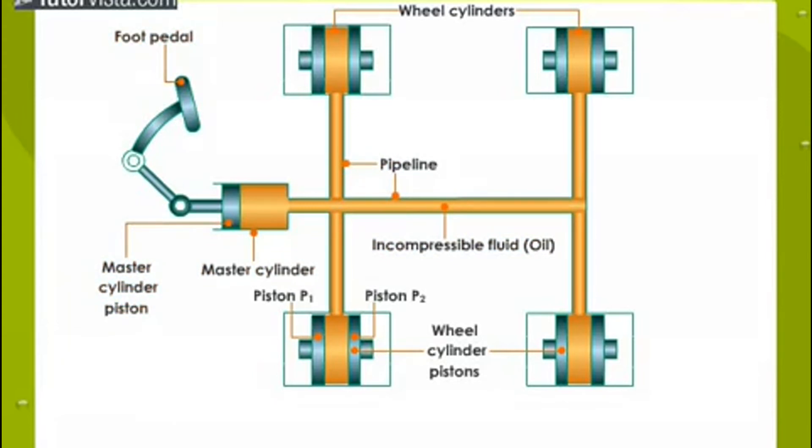The other end of the pipeline is connected to the wheel cylinder, having two pistons, P1 and P2, attached to the brake shoes. The area of cross-section of the wheel cylinder is greater than the area of the cross-section of the master cylinder. Let us see what happens when brakes are applied.